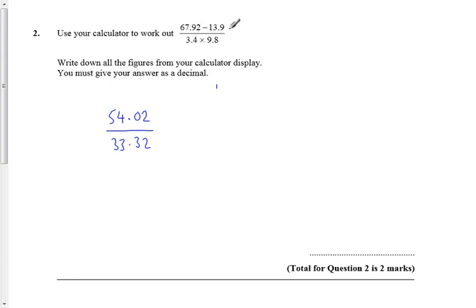First I worked out the top, then I worked out the bottom, and then I'm just going to put it all together and do 54.02 divided by 33.32. And it does say to write down all the figures from the calculator display.